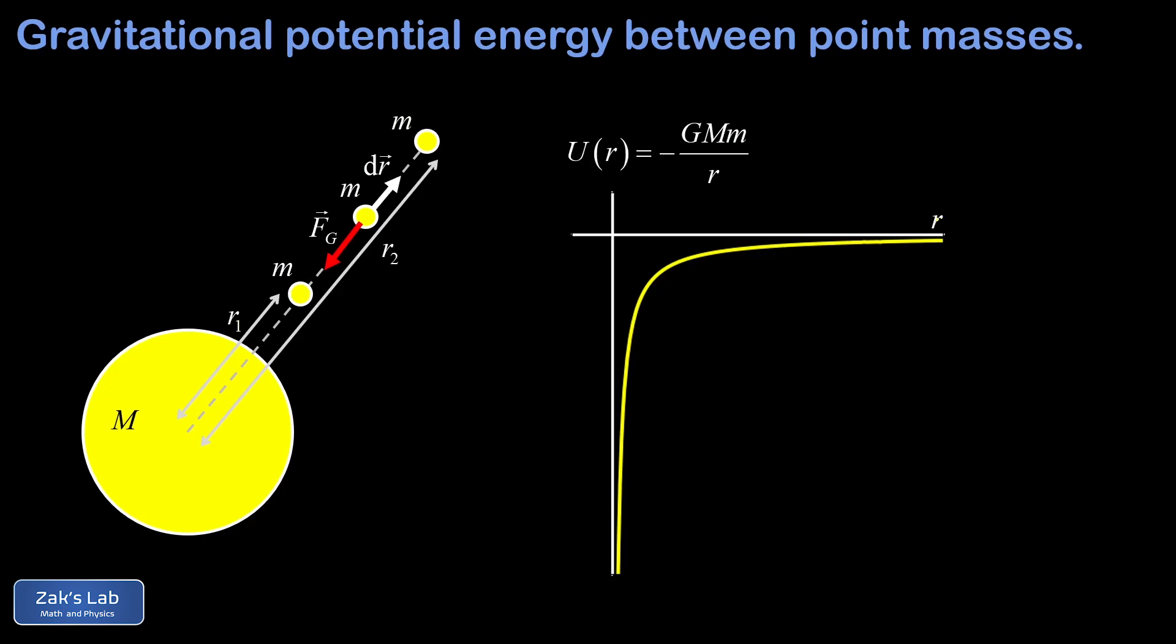First, I notice that as R decreases, in other words, the separation distance between the two masses goes down, the potential energy function is decreasing. That makes good physical sense because we know if we just start two masses from rest and allow them to get pulled toward each other under the force of gravity, we're going to see kinetic energy emerge from that, and that means the gravitational potential energy should be going down.